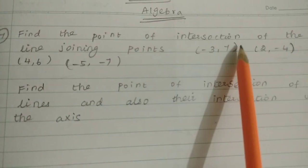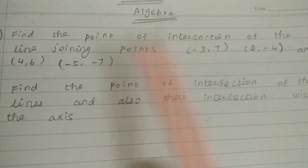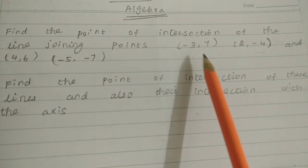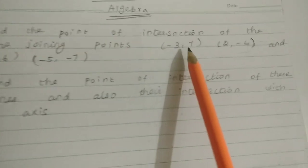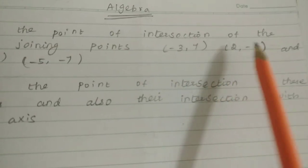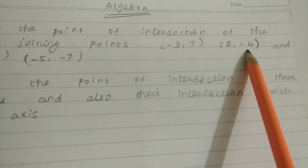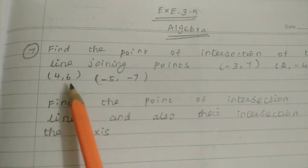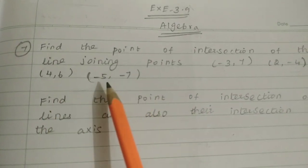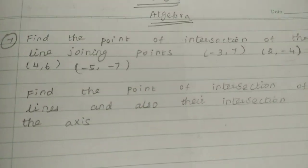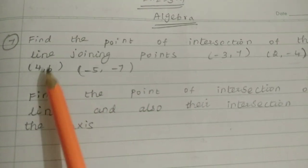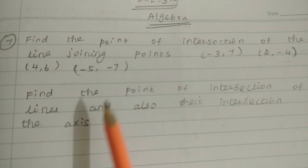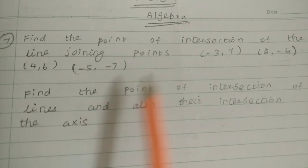Find the point of intersection of the line joining points: minus 3, 7 and 2, minus 4 — and also 4, 6 and minus 5, minus 7.